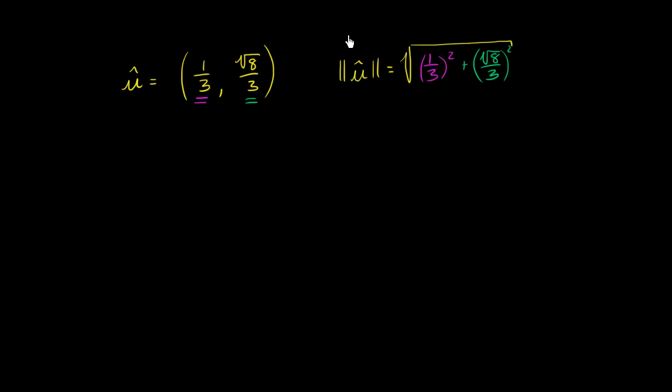And what's that going to be? Well, that's going to be equal to the square root of 1 over 9 plus 8 over 9, which is equal to the square root of 9 over 9, which is equal to 1.